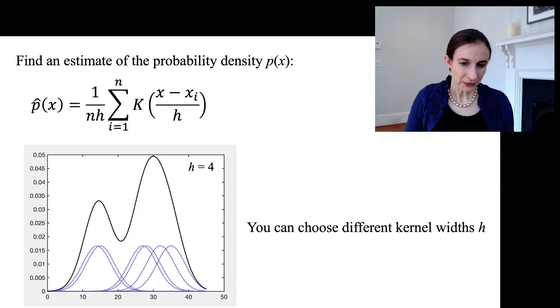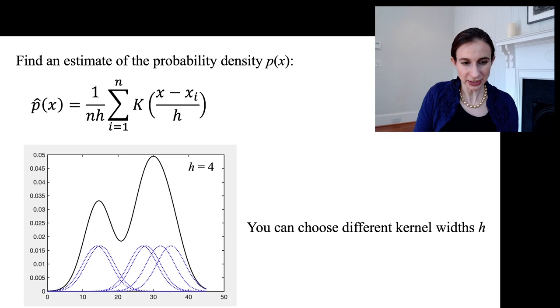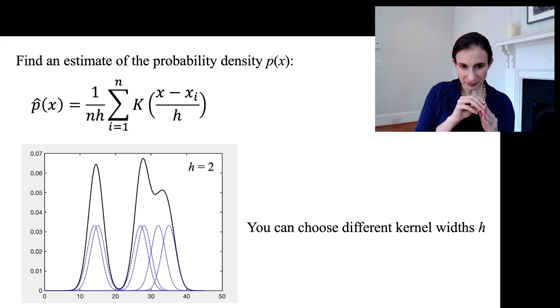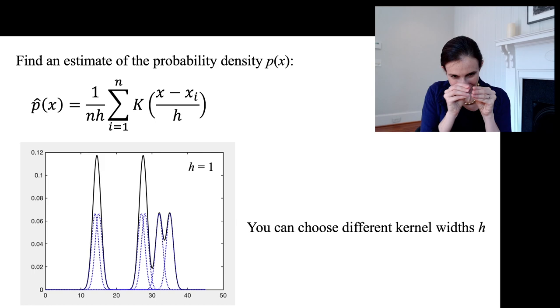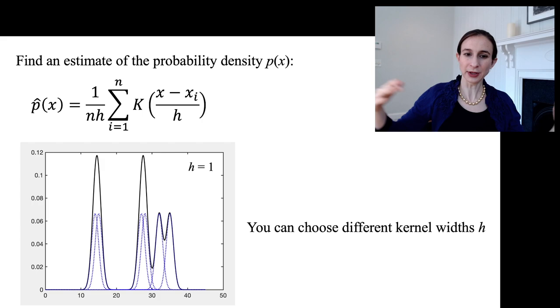You can also choose different kernel widths. In the one I have on the screen and in the previous one, I chose h equals four, so the kernel bandwidth is four. But if you make the kernel narrower, you tend to fit the data more precisely at the risk of overfitting the data. You can make it even tighter and overfit the data even more.